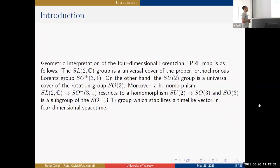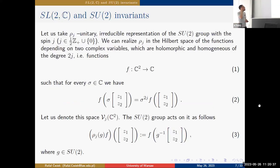The geometric interpretation of the four-dimensional Lorentzian EPRL map is as follows. SL(2,C) is the universal cover of the proper orthochronous Lorentz group SO(3,1). Its subgroup SU(2) is the universal cover of the rotation group SO(3), and SO(3) is the subgroup of the proper orthochronous Lorentz group which stabilizes a time-like vector in four-dimensional space-time.